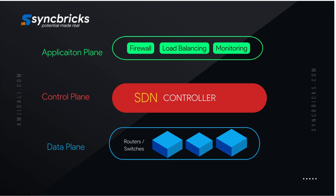Applications at the top layer send requests — such as bandwidth requirements or security policies — to the controller. The controller processes these requests and determines how the network should respond. Finally, the controller sends instructions to the infrastructure layer, enabling the network devices to execute the desired configuration. This process ensures that the network is dynamic, adaptable, and easy to manage.